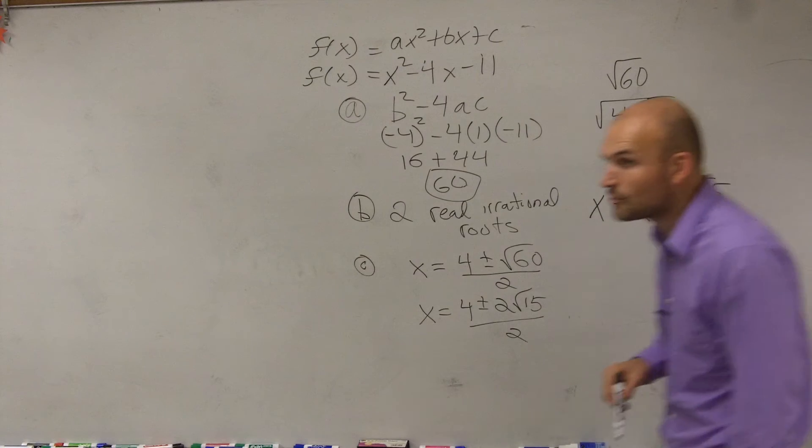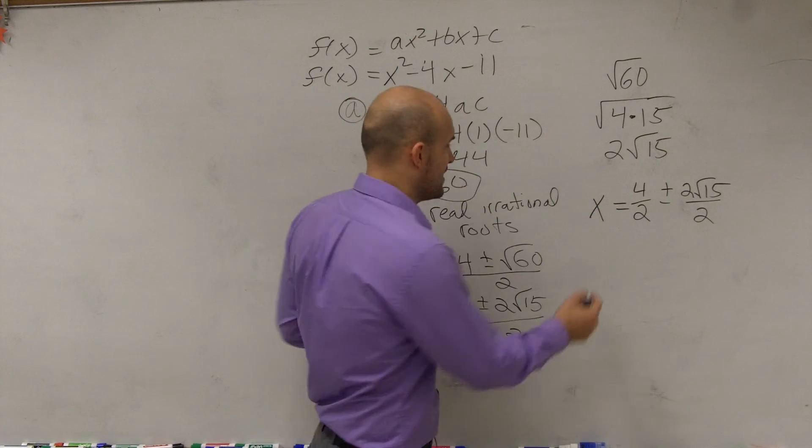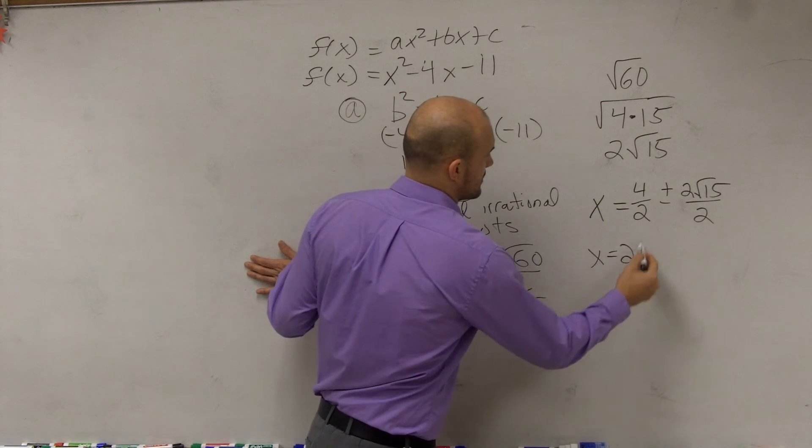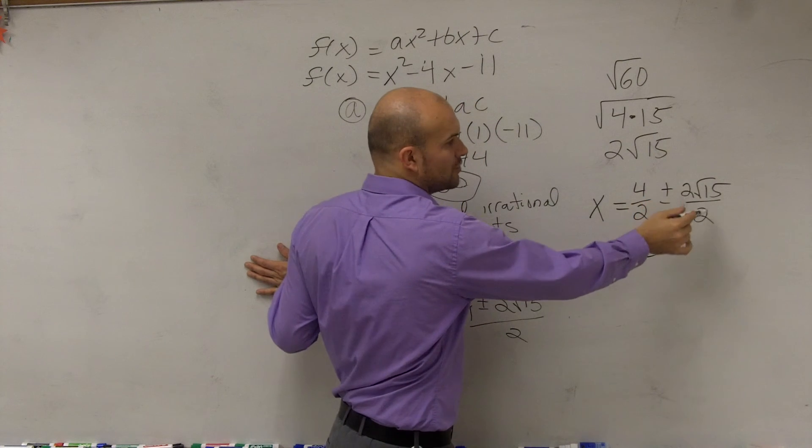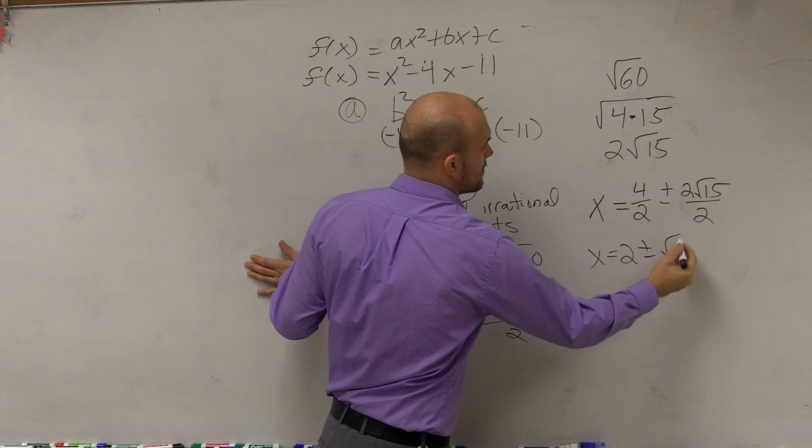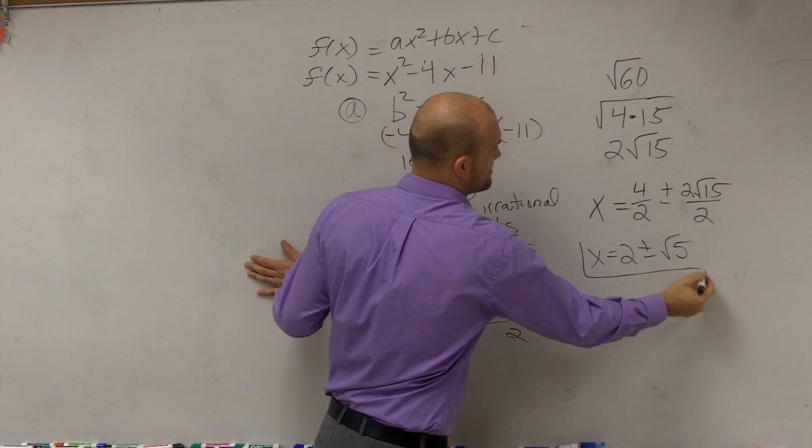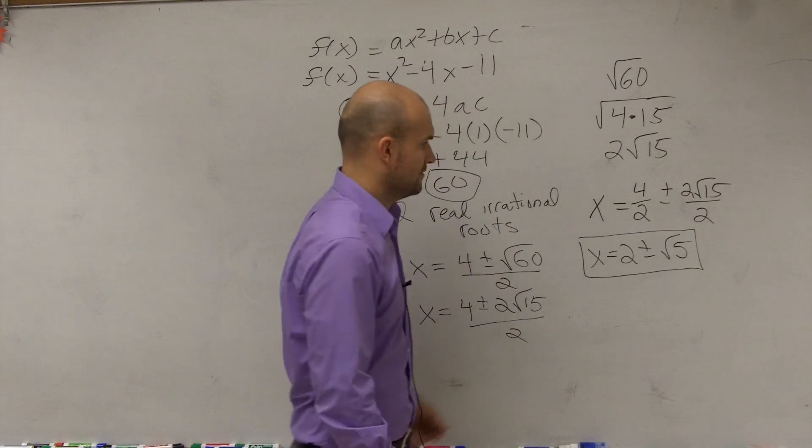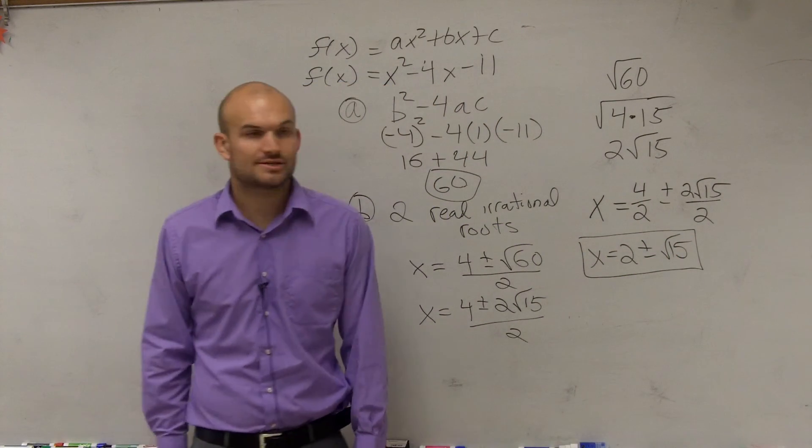Well, what you guys notice, can you guys divide 4 divided by 2? Yeah, that's going to simplify it. And then 2 divided by 2 equals 1. So that is going to be your final 15, final simplified answer.